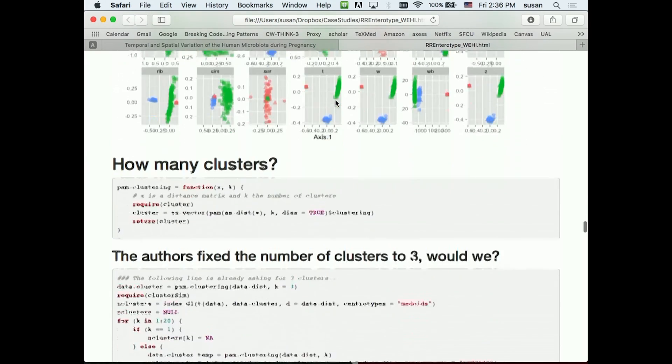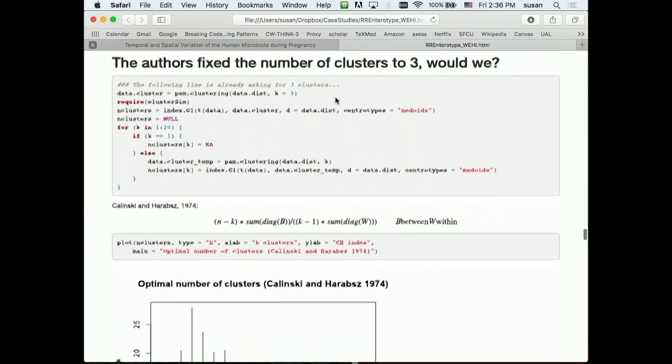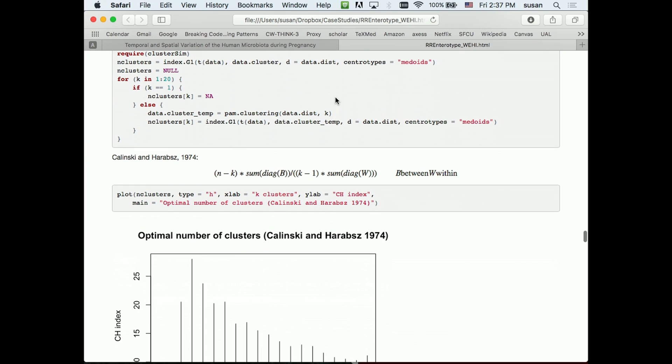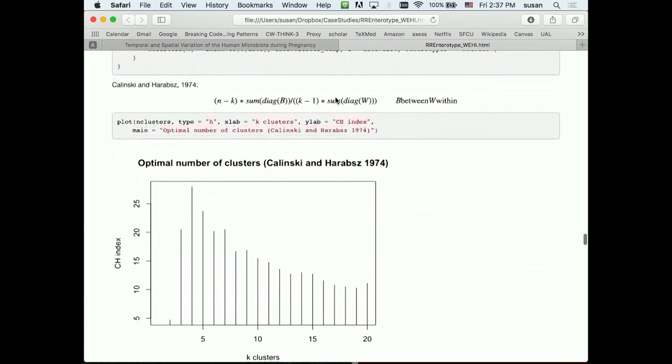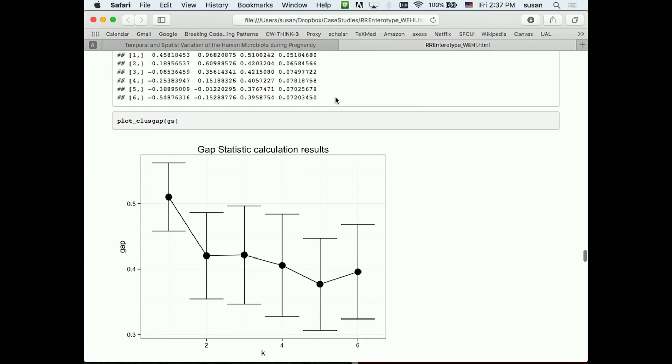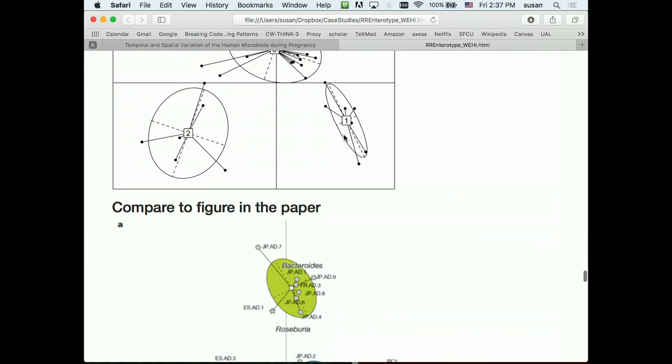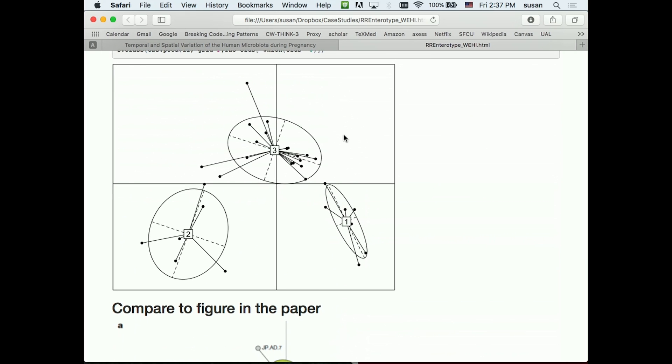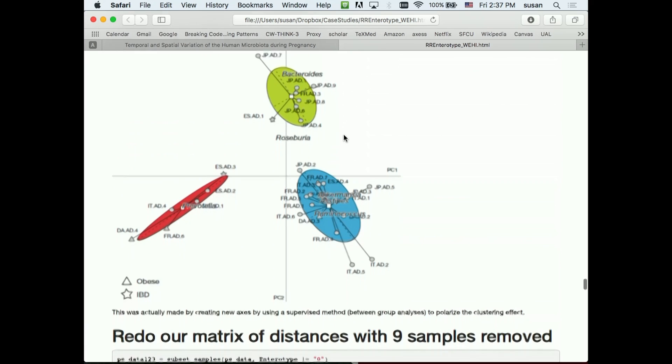So you might use a different clustering variable, and you can ask the question, you know, how many clusters were there? So the authors of the paper decided that there were three clusters, and the way they did it was completely heuristic, but we actually have pretty good criteria metrics for deciding how many clusters there are. There's Kalinsky and Haribas is one method which gave an optimal number of clusters at four and not three. You can use the gap statistic, which chose two. And if we go back to what they actually found, and we choose the same distance, the same three clusters, this is what we found.